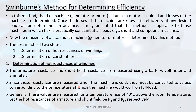Since these resistances are measured when the machine is cold, they must be converted to values corresponding to the temperatures at which the machine would work on full load. Cold condition resistances are corrected for a temperature rise of 40 degrees Celsius above the room temperature. Let the hot resistance of the armature and shunt field resistance be R_A and R_SH respectively.